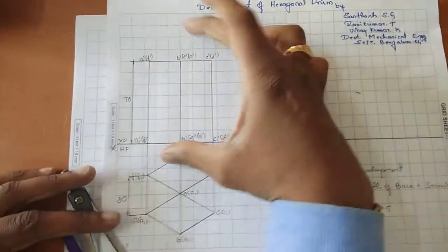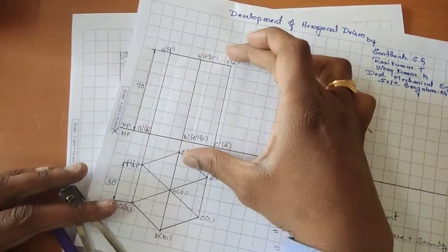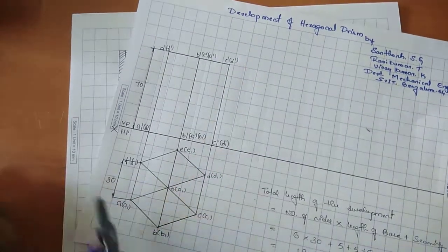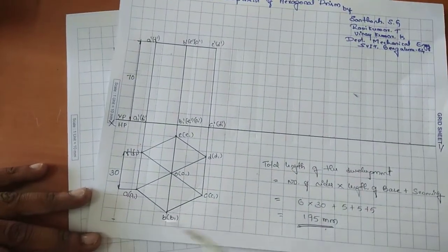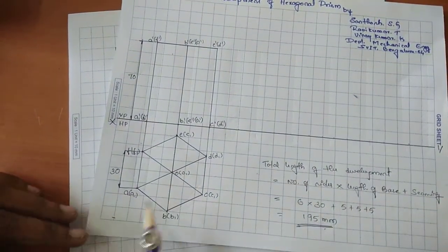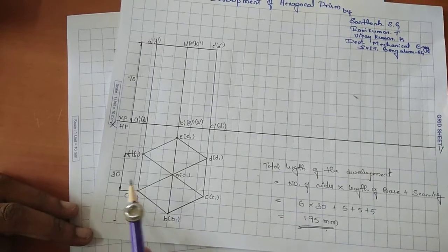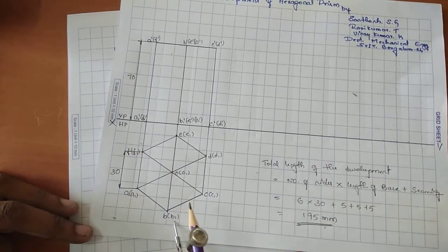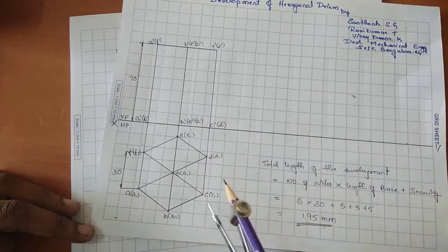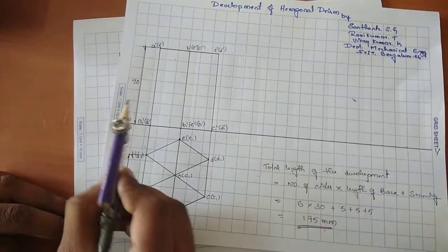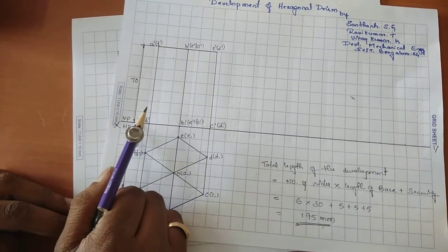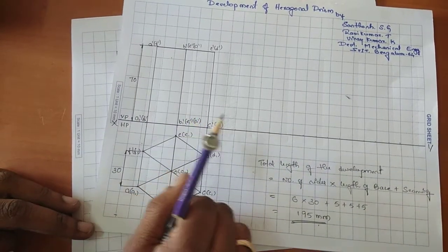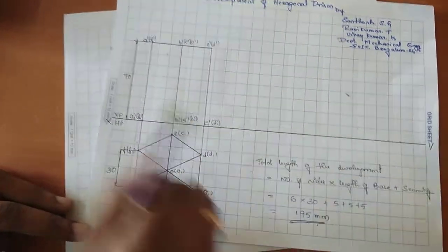This is the front view of the hexagonal prism. To construct the front view, note that when looking from the front: A1 is visible, F1 is invisible; B1 is visible, E1 is invisible; C1 is visible, D1 is invisible. The projection points are A1', F1', B1', E1', O1', C1', and D1'.